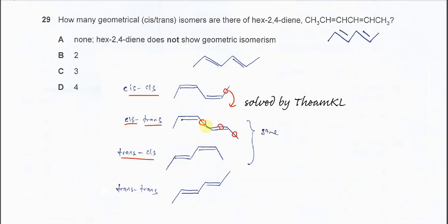If you look carefully, the cis-trans and trans-cis isomers are actually the same. If you rotate one 180 degrees, you get exactly the same as cis-trans. So these two are actually the same molecule — they are not separate isomers. They are considered one isomer.